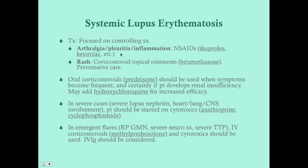For the USMLE, you just need to know lupus treatment at a superficial level, since in real life it's managed by a rheumatologist. What we do for lupus is control the symptoms because there is no cure — we're trying to keep the patient healthy and happy. For arthritis and general inflammation including oral ulcers, serositis, and pleuritis, we give NSAIDs such as ibuprofen, ketorolac, or meloxicam, which work directly against the pathology.